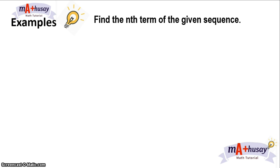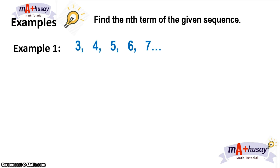Example number 1. We have the sequence 3, 4, 5, 6, 7. To find the nth term of the sequence, let's describe it. We see that each term after the first can be generated by adding 1 to the preceding terms.